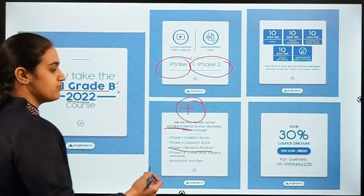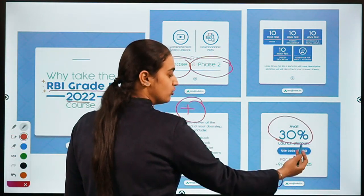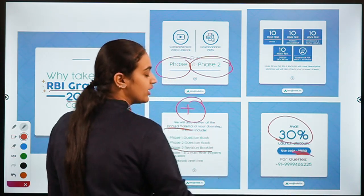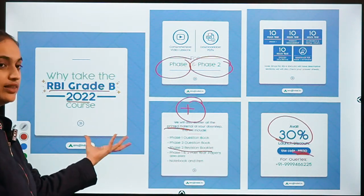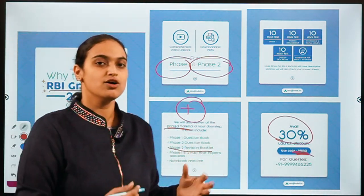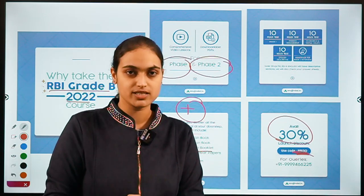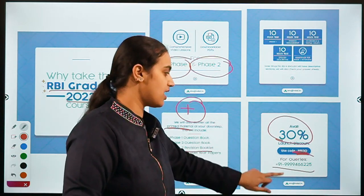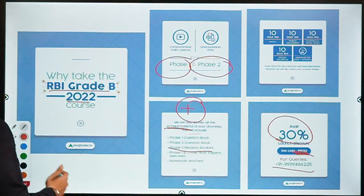This course has been launched at a 30% discount. You can use the coupon code RBI30 to avail this offer. For further queries, you can visit our website or call on the provided number. So let's get started now.